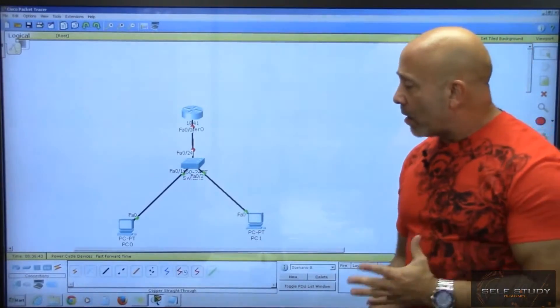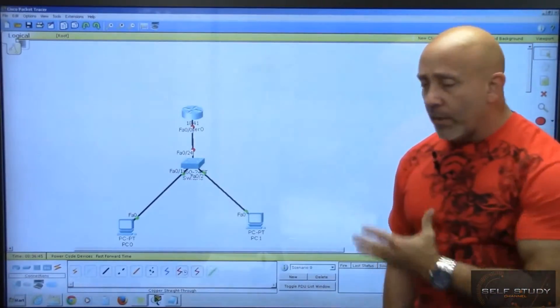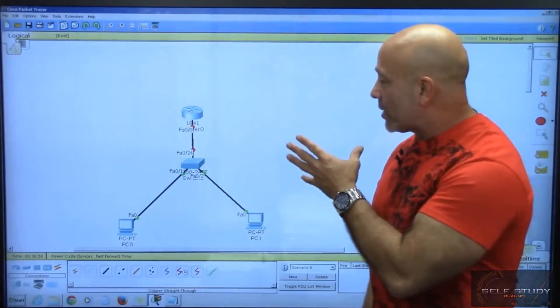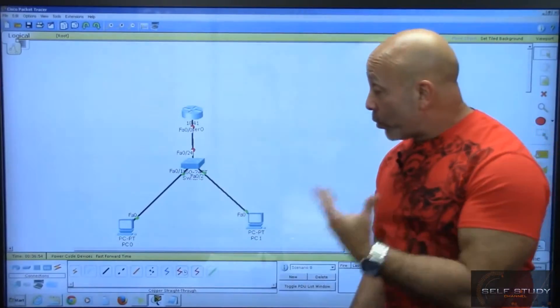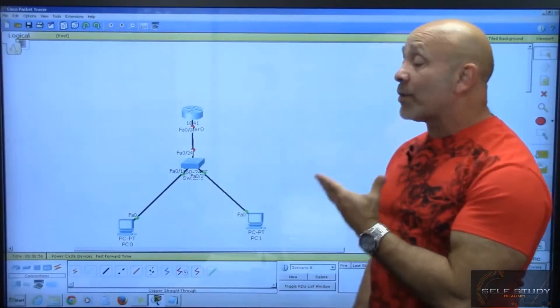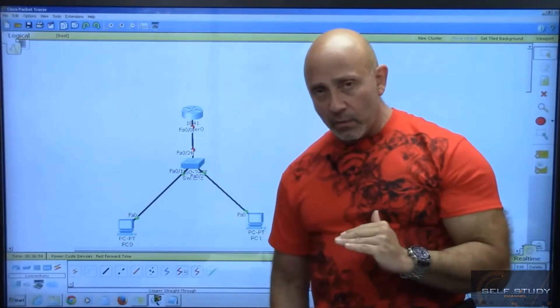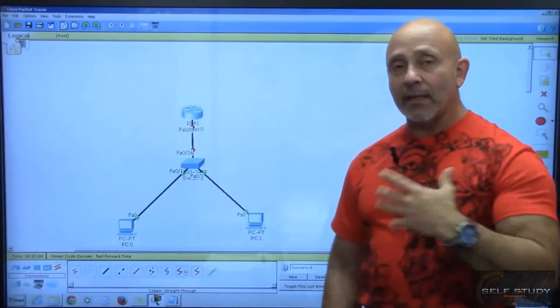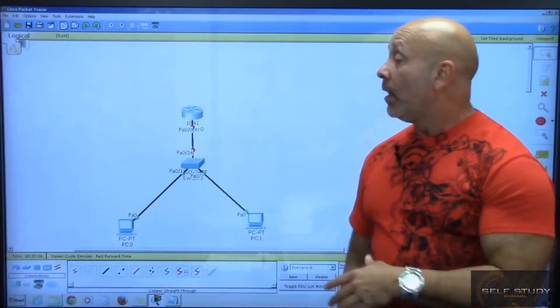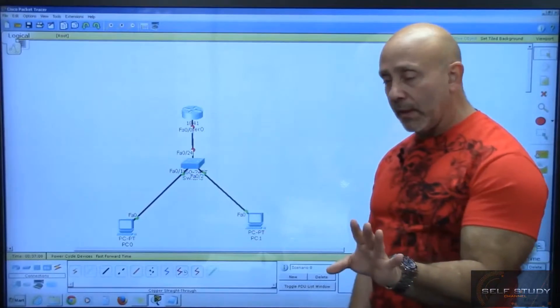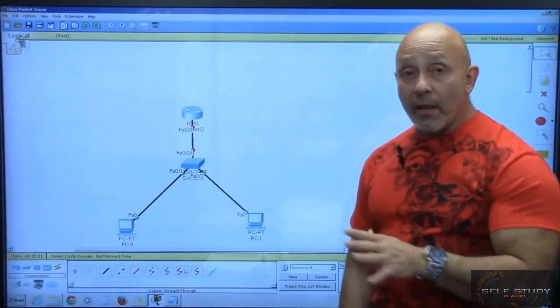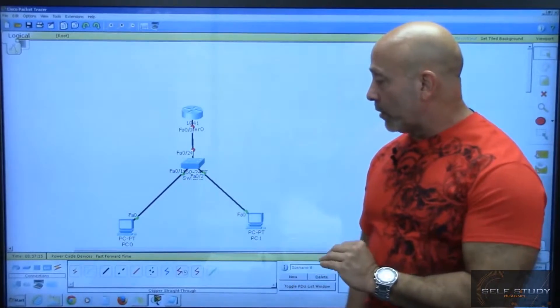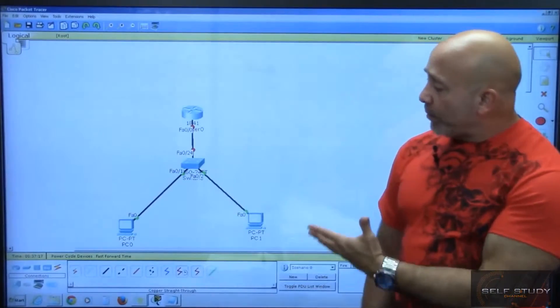You may be asking yourself, hey, how come we got green lights on the PCs going to the switch, but we got a red light going from the switch to the router? The reason is because the router's interfaces, by default, they're down. They're not on, they're turned off. That's not an error. A router straight out of the box with no configurations whatsoever, all the interfaces will be turned off. That's why you see that.